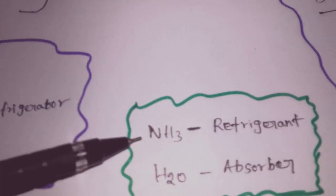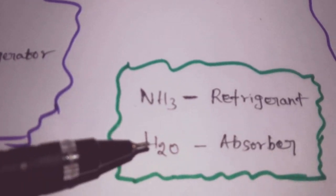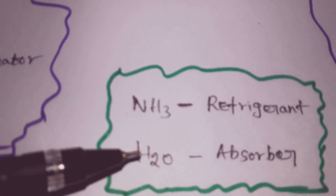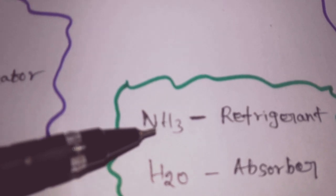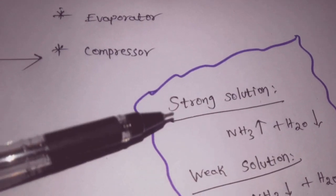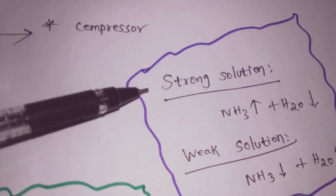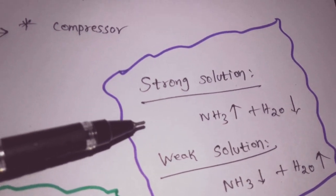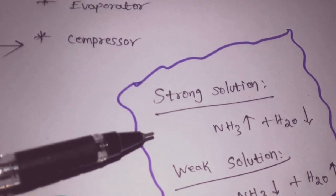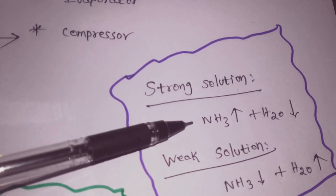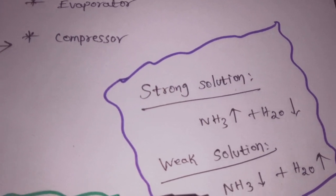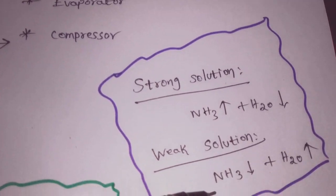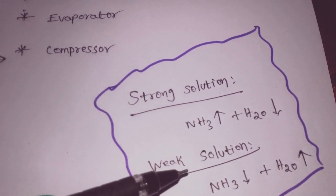In the Simple Ammonia Water Refrigeration System, ammonia (NH₃) is the refrigerant and water (H₂O) is the absorbent. There are two key terms: Strong Solution, where ammonia is fully dissolved in water, and Weak Solution, where the ammonia content is low.